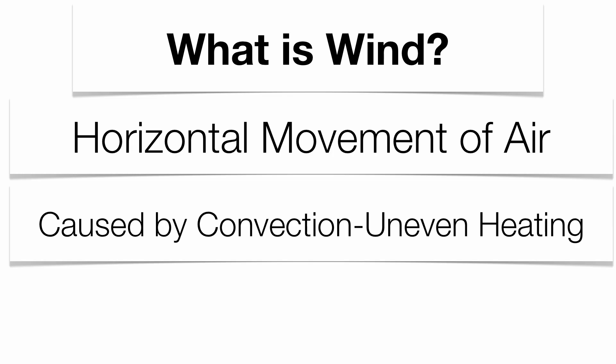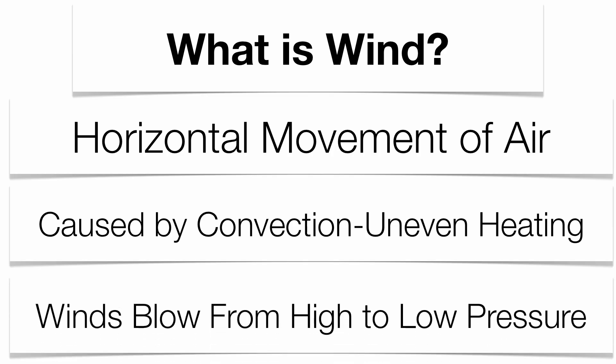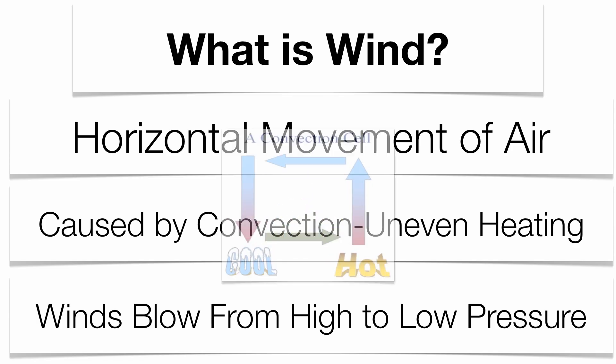Warm air is going to rise, cold air is going to sink — that's going to cause a convection cell. Once convection occurs within the atmosphere, you're going to get yourself a wind. Now winds always blow from high pressure to low pressure. Winds around high pressure go clockwise and outward, while winds around a low pressure center go counterclockwise and inward.